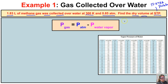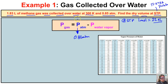At STP, one mole of any gas occupies 22.4 liters — that will be important later. The atmospheric pressure when the gas was collected was 0.85 atmospheres, and since the gas was collected over water, we need to find the vapor pressure of water at 300 K.